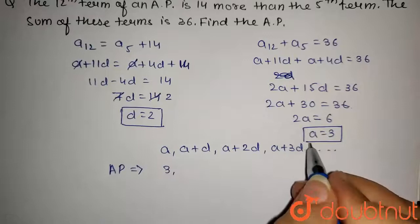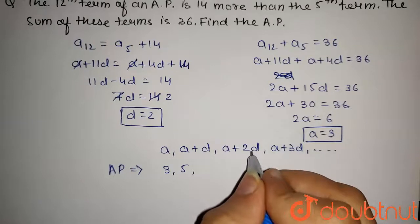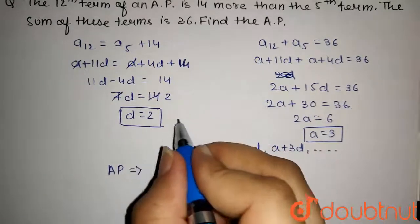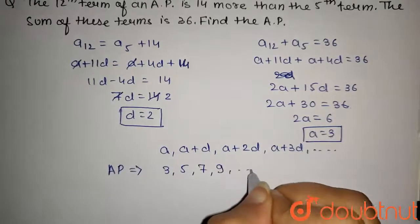A plus D, 3 plus 2, that's 5. A plus 2D, that is 3 plus 2 into 2, that's 7. The fourth term will be A plus 3D, that is 9, and so on.